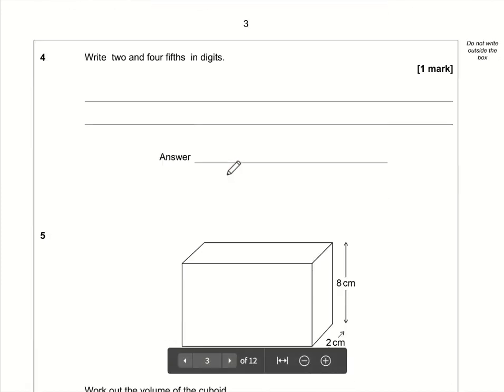Question number four: write two and four-fifths in digits. This is relatively straightforward. I think we know how to write 2, hopefully. Four-fifths is 4 over 5, so two and four-fifths is 2 and 4/5.